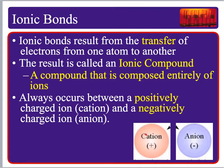Remember, positive ions are called cations — because they're so positive! And then we have the negatively charged anions. Atoms form these ionic bonds because they want to fulfill the octet rule — they want full valence shells. That's why they become ions, and then these opposite charges attract each other.